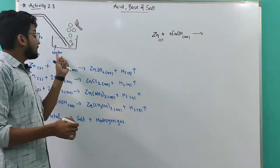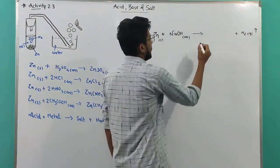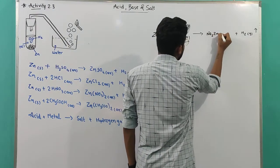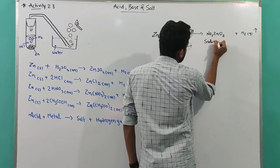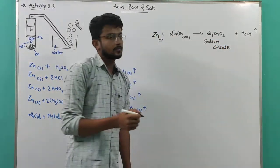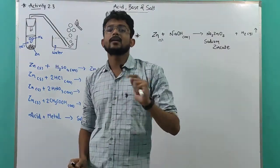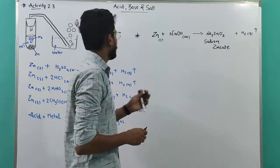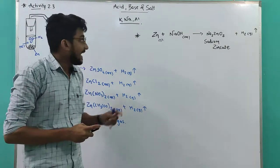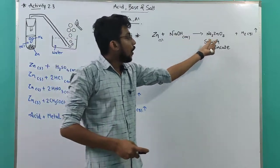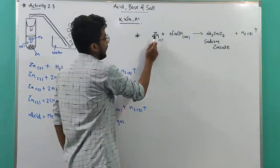From there, hydrogen gas is also released, and what else forms? Na2ZnO2 — sodium zincate. This is a special reaction. Generally, bases don't react with metals, but with active metals like potassium, sodium, and aluminium, the reaction occurs. These active metals react with base to give a complex compound and hydrogen gas is released.